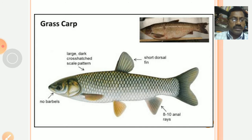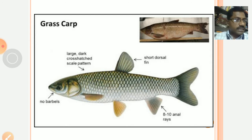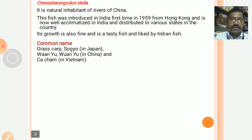There are different types of fins: dorsal fin, pectoral fin, anal fin, pelvic fin, and caudal fin. The body is covered with scales and barbels are absent in the grass carp, Ctenopharyngodon idella.